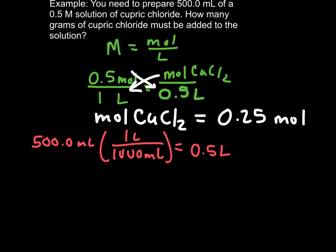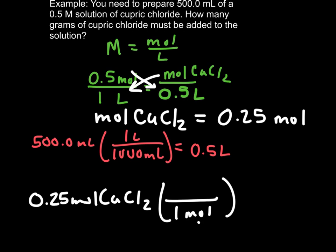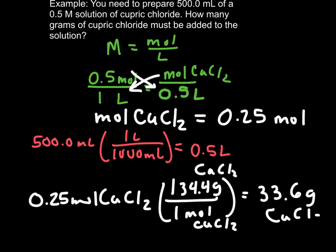However, we can't measure out moles in the lab. So now we need to convert the 0.25 moles of cupric chloride to grams. When we add up our copper and our two chlorines, our molar mass is... hang on one second... 134.4 grams of cupric chloride. So when we run our calculation, we find that we need to weigh out 33.6 grams of cupric chloride in the lab and then add it to our solution in order to make 500 milliliters of a 0.5 molar solution of cupric chloride.